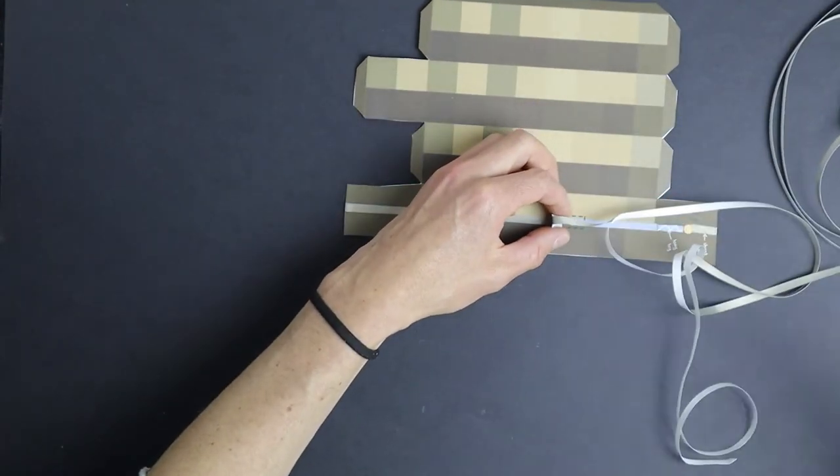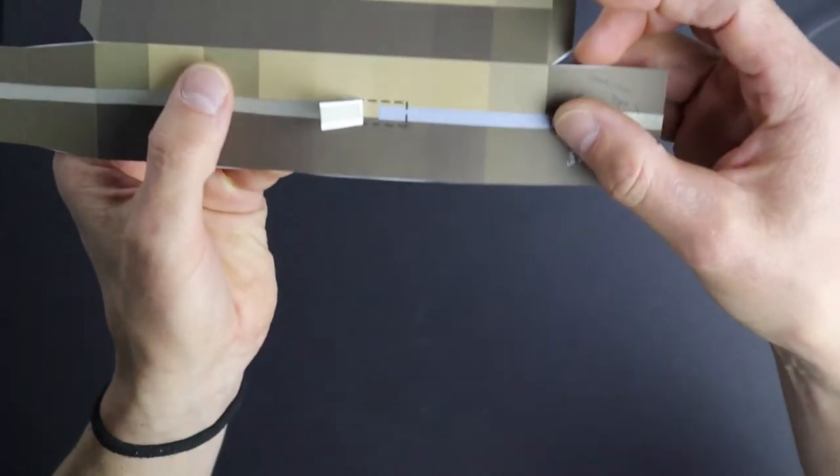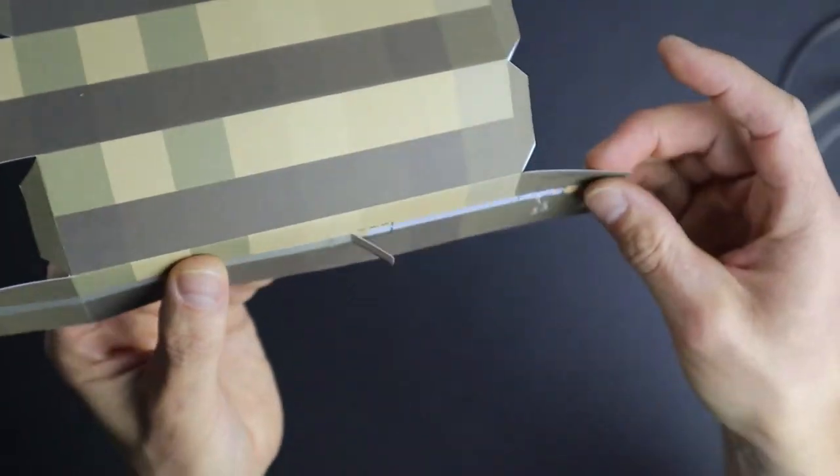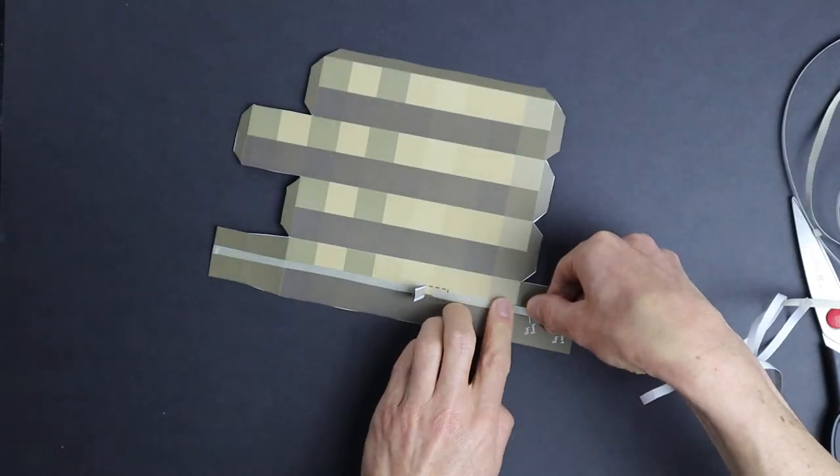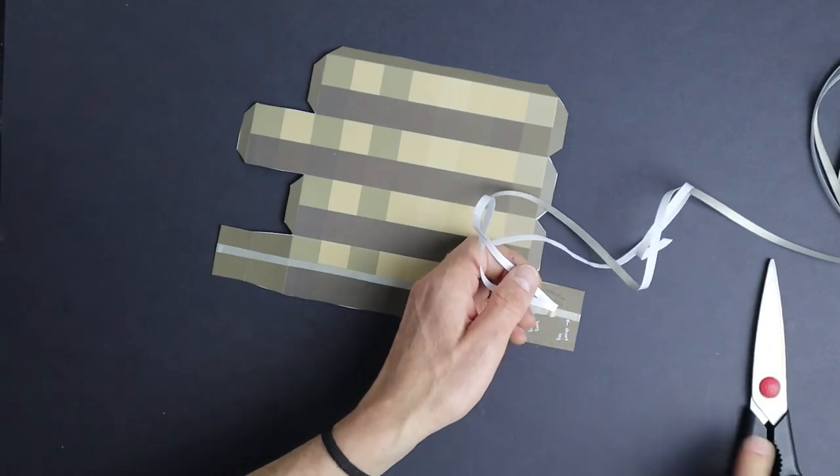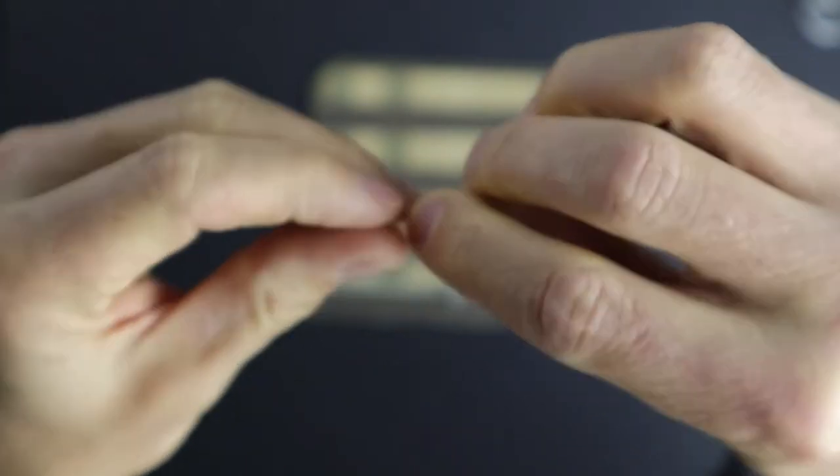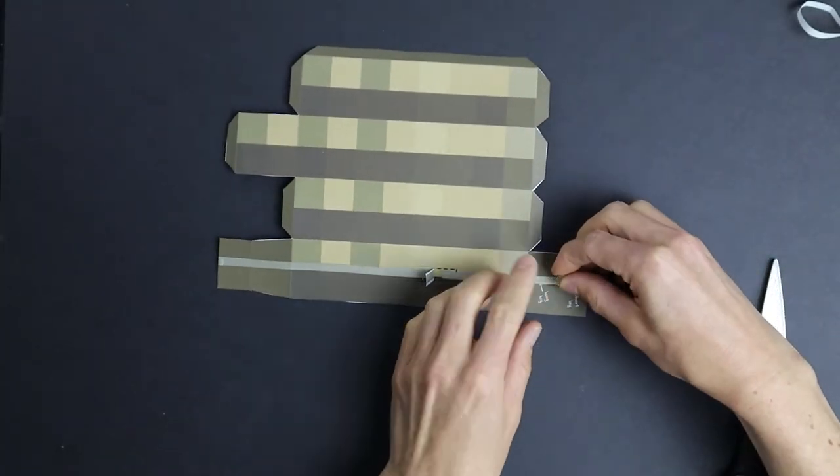Our on-off switch needs to have conductive tape running to the bottom side of it. Start another path from underneath the switch up to our LED. The LED has one slightly longer leg which has to point to the direction of our plus pole of the battery.